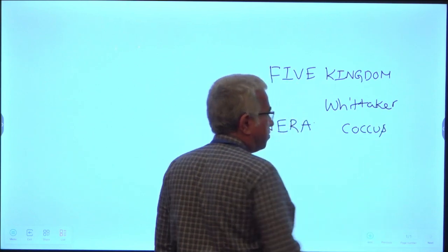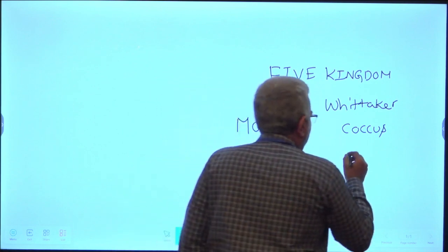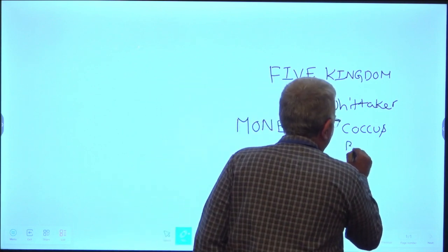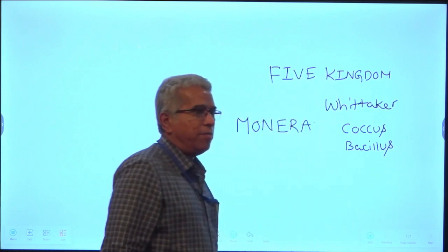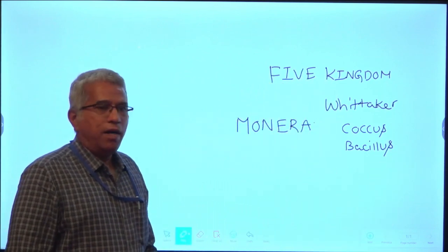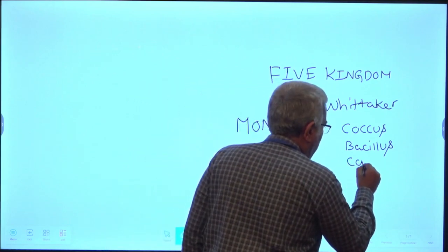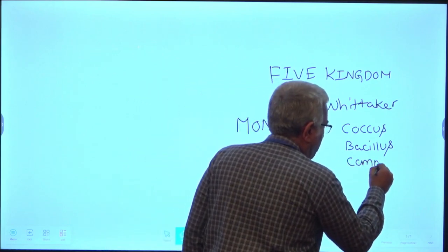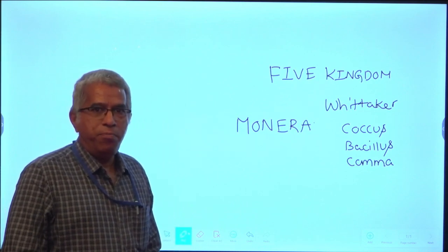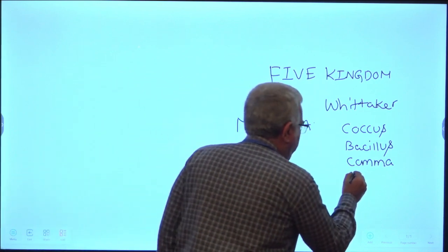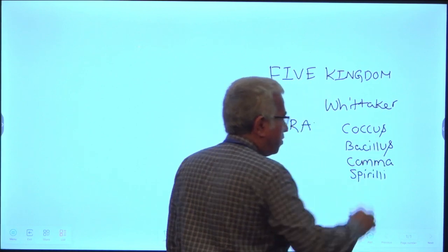If the bacteria are round, such bacteria are called coccus. Rod-shaped bacteria are called bacillus. Vibrio is a comma-shaped bacteria. And the spiral-shaped bacteria are called spirillum.